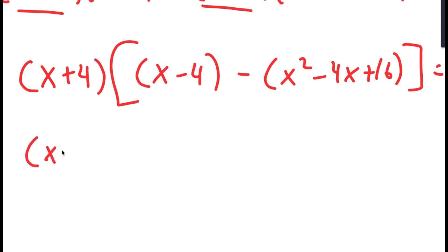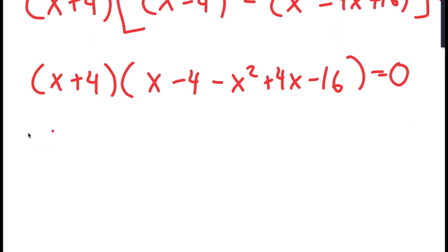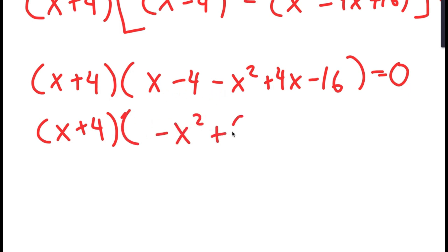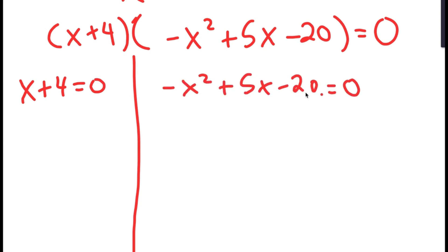Distributing the negative sign inside gives (x plus 4)(x minus 4 minus x squared plus 4x minus 16) equals 0. Simplifying, I get (x plus 4)(negative x squared plus 5x minus 20) equals 0. This gives two equations: x plus 4 equals 0, and negative x squared plus 5x minus 20 equals 0. For x plus 4 equals 0, subtracting 4 gives x equals negative 4.